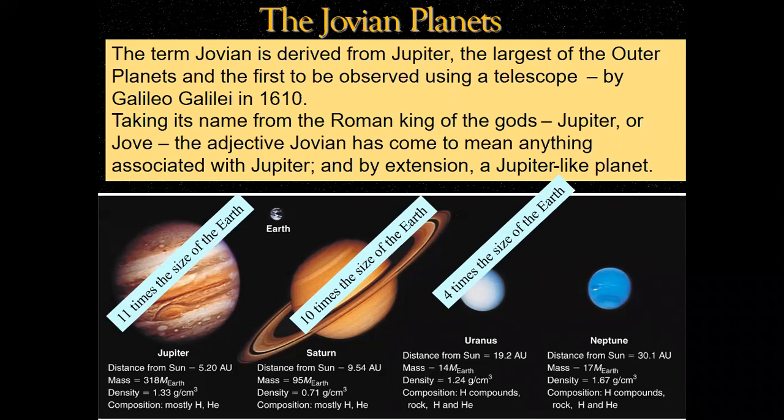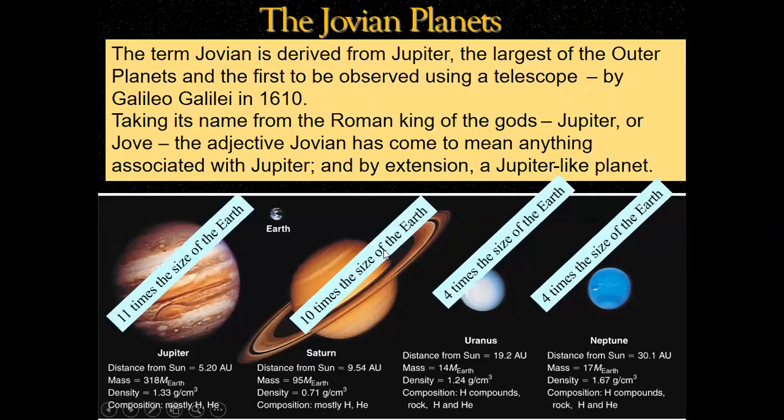Uranus is four times the size of Earth, and Neptune also four times the Earth. Please don't get confused about these sizes. These sizes are compared with the diameter. If you think about Saturn, we should be able to align 10 Earths along the diameter. I'm not talking about volume size, I'm talking about diameter. The diameter of Saturn is 10 times the diameter of Earth.